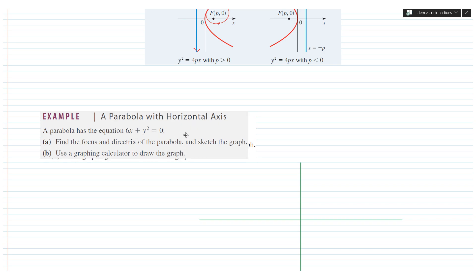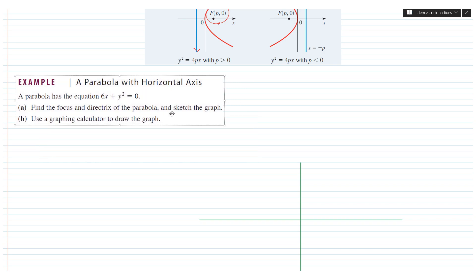Let us now work on a simple example to see how to draw a parabola and find its parameters. We have the parabola 6x + y² = 0, which we can rewrite as y² = -6x. For obvious reason, the parabola is along the x-axis, meaning it is horizontal and not vertical.